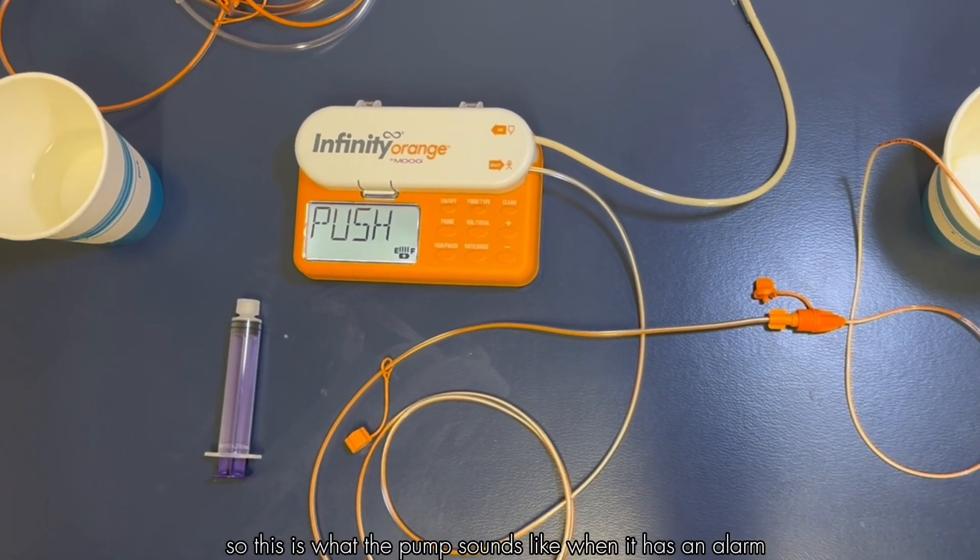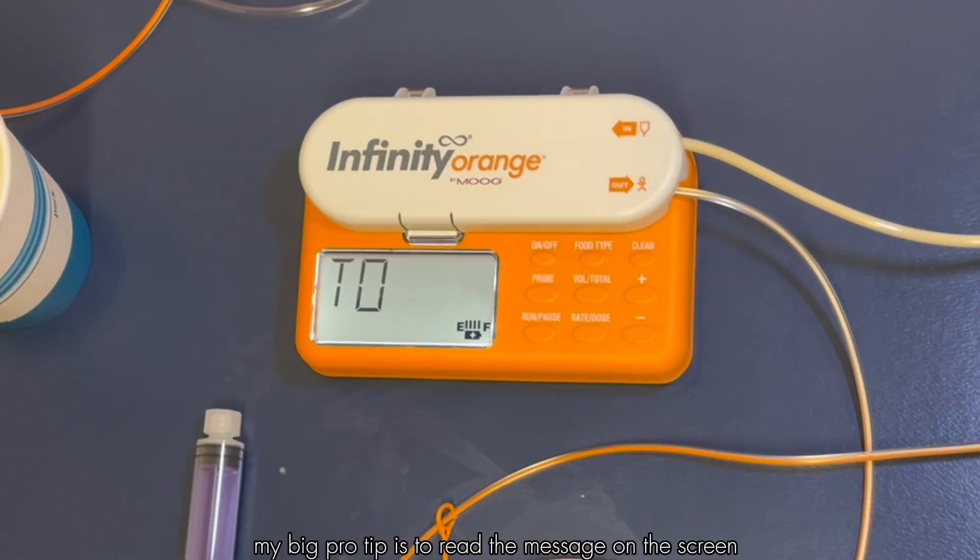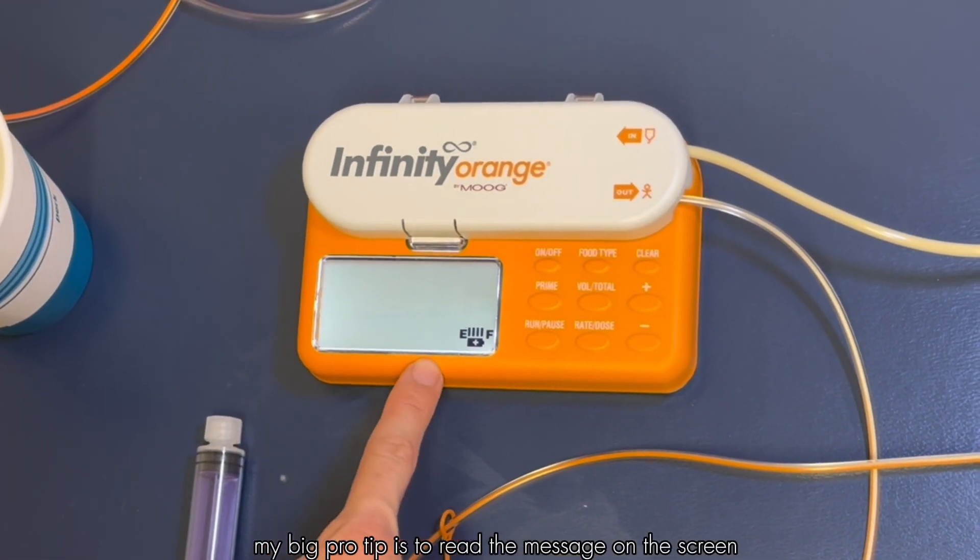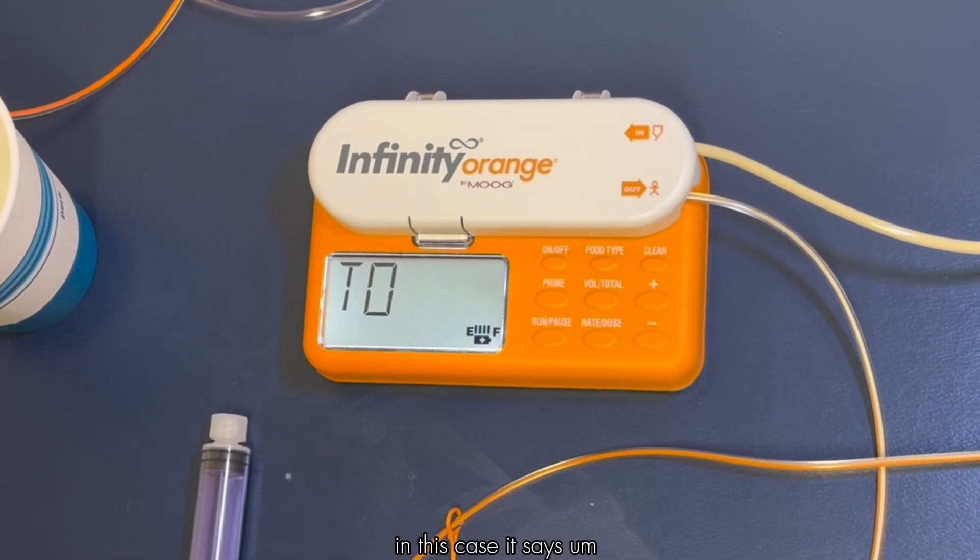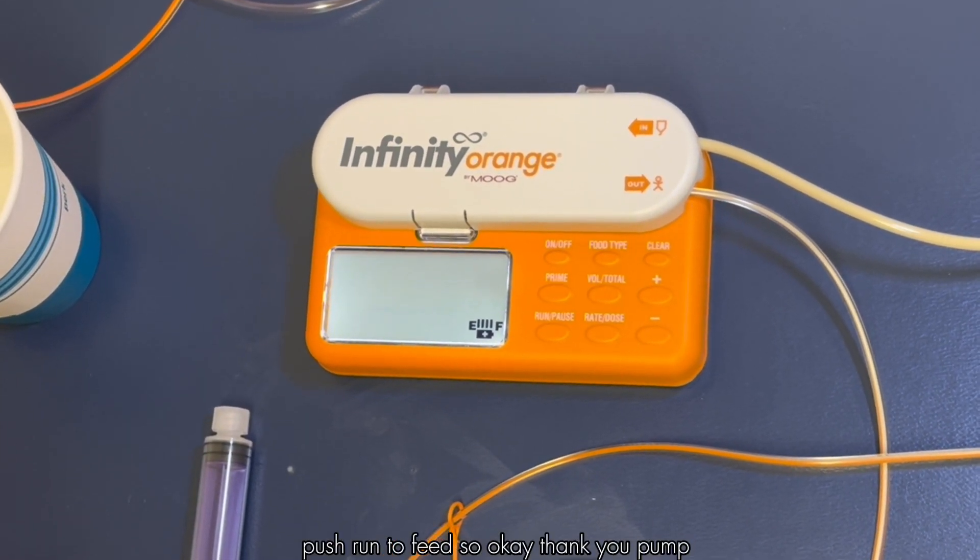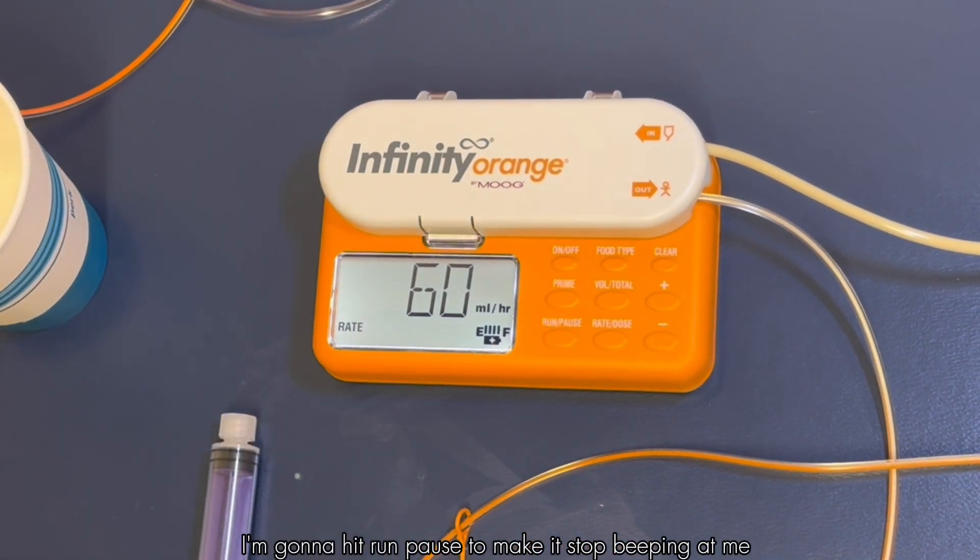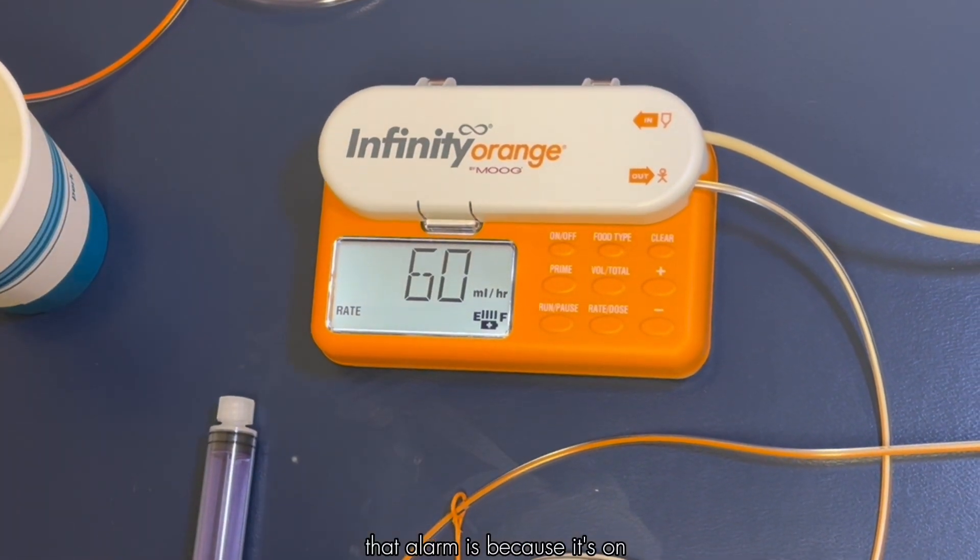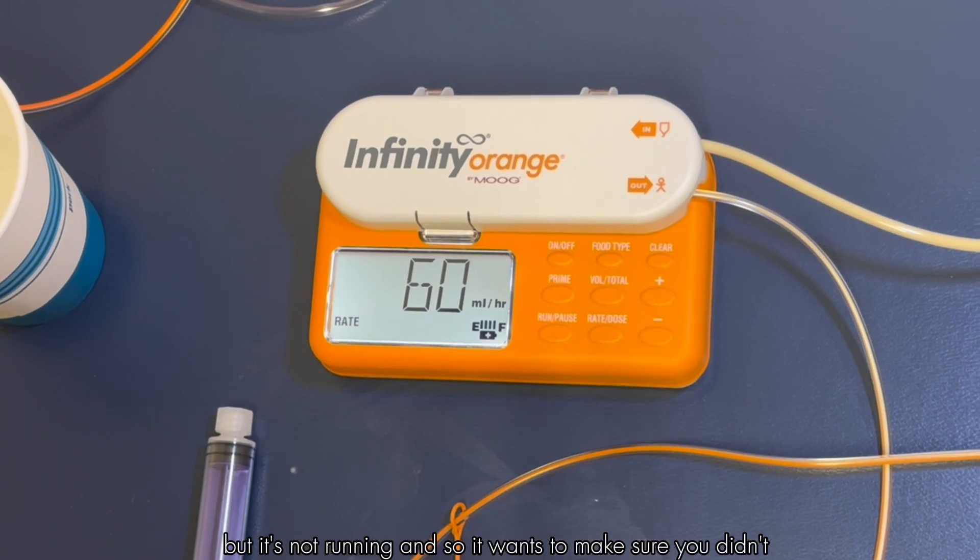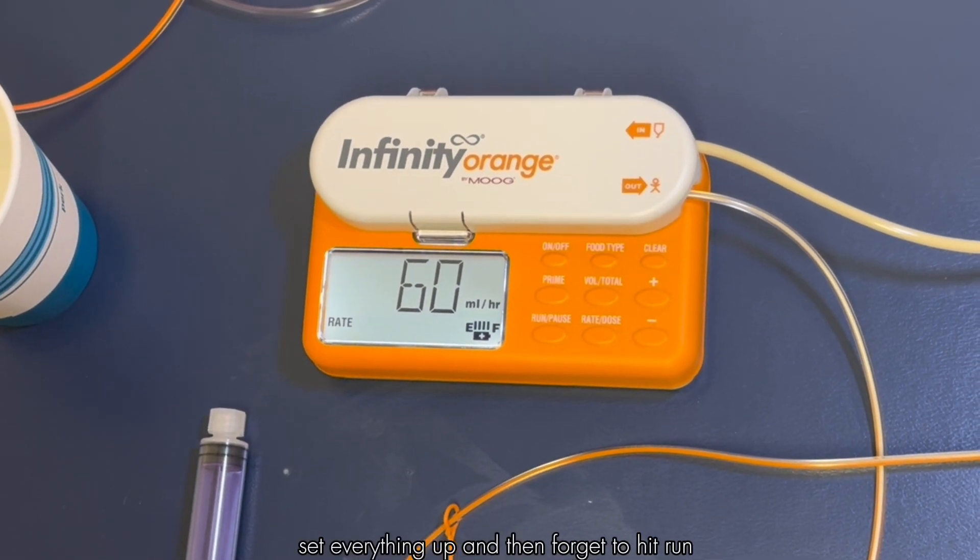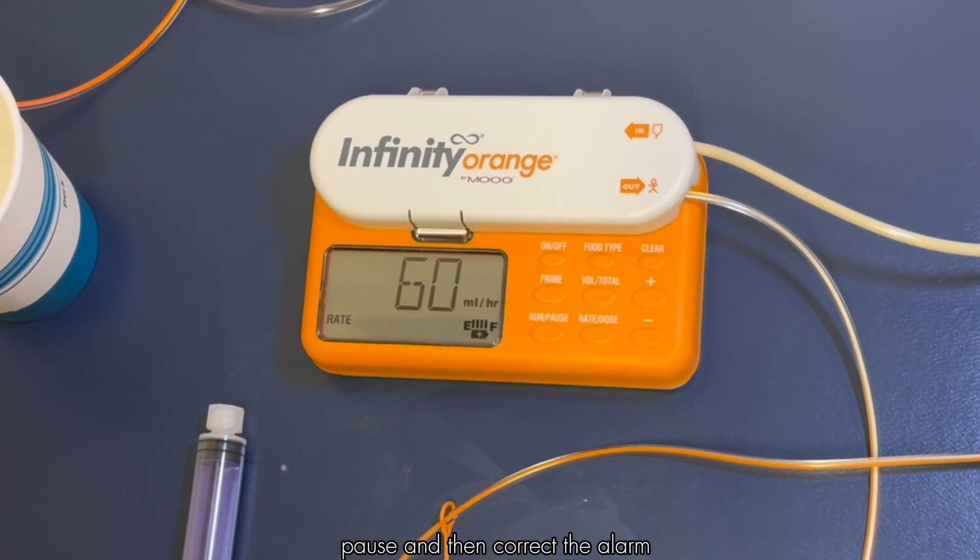So this is what the pump sounds like when it has an alarm. My big pro tip is to read the message on the screen to tell you what's going on. In this case it says push run to feed. Okay, thank you pump, I've got the message. I'm going to hit run pause to make it stop beeping at me. That alarm is because it's on but it's not running and so it wants to make sure you didn't set everything up and then forget to hit run. But typically you can just hit run pause and then correct the alarm.